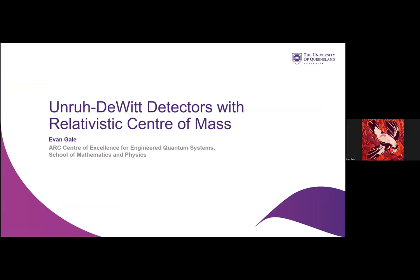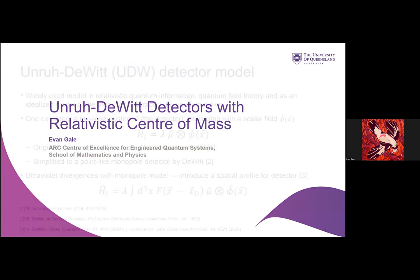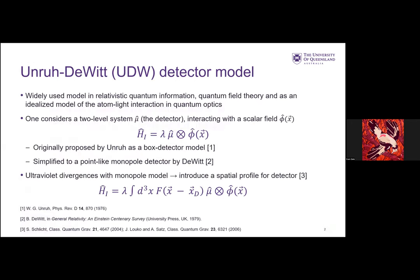So this talk is following on quite closely from Carolyn's talk, sort of looking at the same sort of idea. Here we have the Unruh-DeWitt detector model, which of course everyone here is familiar with. It's commonly used in relativistic quantum information, quantum field theory, and in particular as an idealized model for the atom-light interaction in quantum optics.